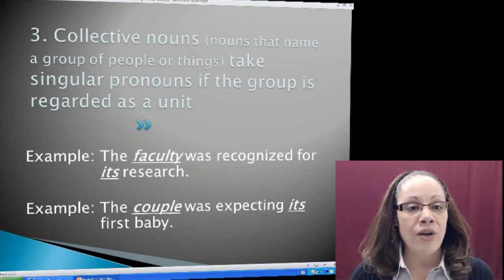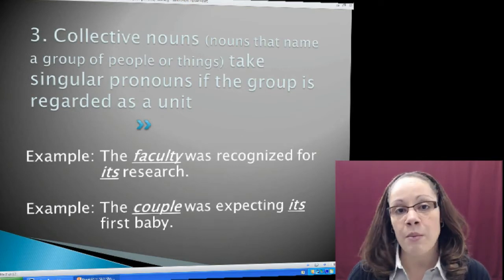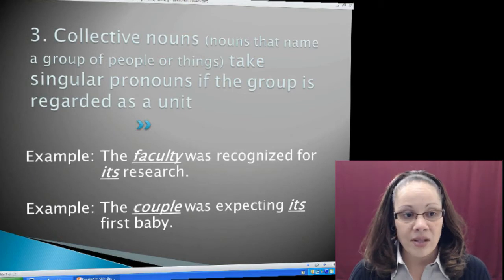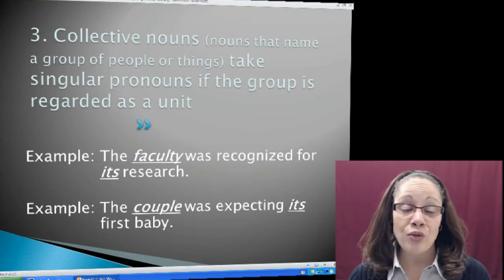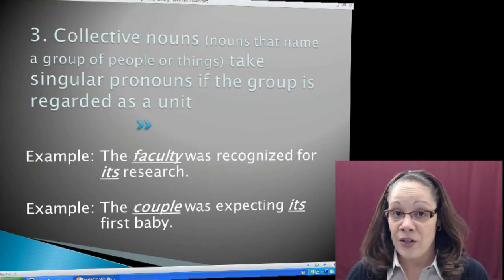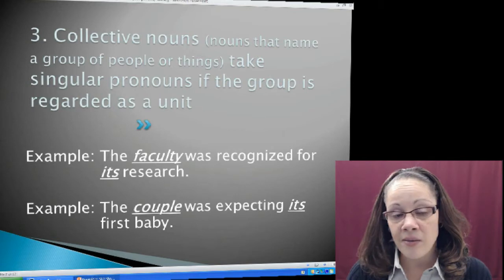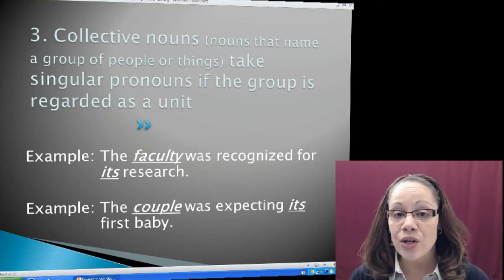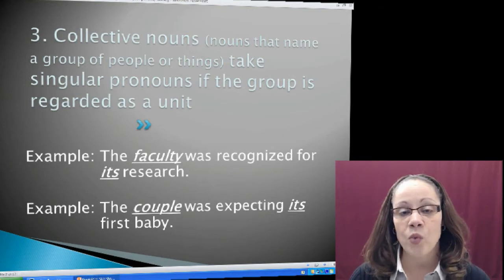My third rule for subject-pronoun agreement involves collective nouns — nouns that name a group of people or things. Collective nouns take singular pronouns if the group is regarded as a unit. For example: The faculty was recognized for its research. Faculty is one unit in this sentence, so I need the singular pronoun it in reference to faculty. Next example: The couple was expecting its first baby. The couple is one singular unit, so I need the singular third person pronoun its in reference to couple.